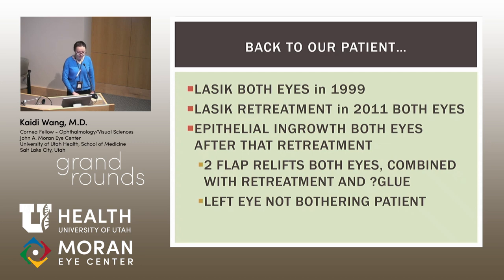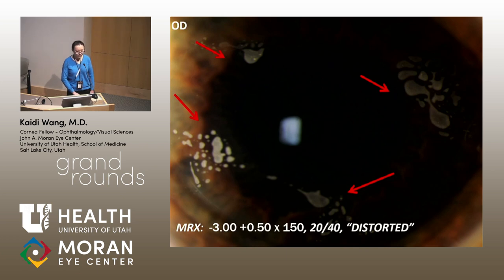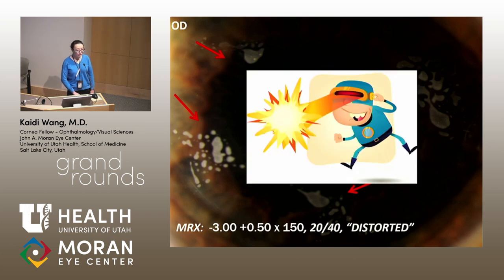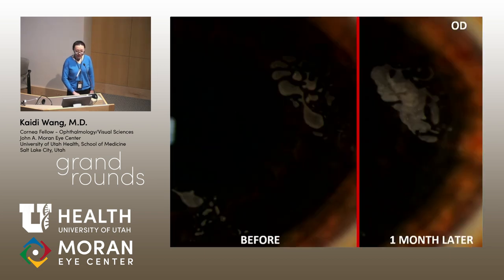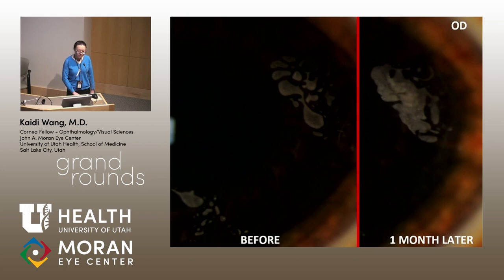Back to our patient: she had LASIK in both eyes in 1999 with retreatment in 2011, and had epithelial ingrowth in both eyes after that retreatment. She had already had a few flap relifts combined with retreatment and some question of glue. Her left eye was not bothering her, and her right eye only corrects to 20/40 with these nests of epithelial cells and very distorted vision. We first did try YAG laser for her, but unfortunately it didn't seem to really work in this case — before on the left and one month later on the right, that area of epithelial ingrowth doesn't seem like it's regressing.